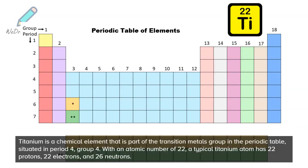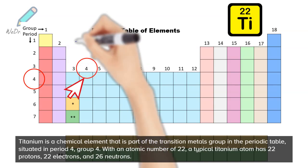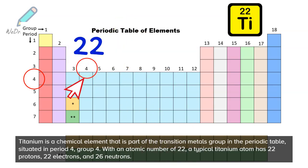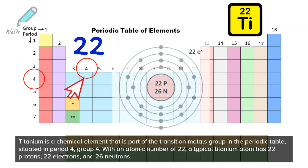Titanium is a chemical element that is part of the transition metals group in the periodic table, situated in period 4, group 4. With an atomic number of 22, a typical titanium atom has 22 protons, 22 electrons, and 26 neutrons.